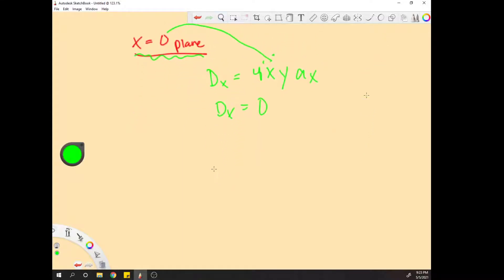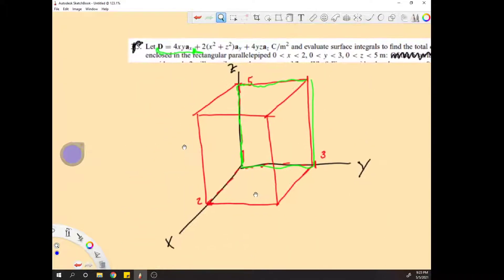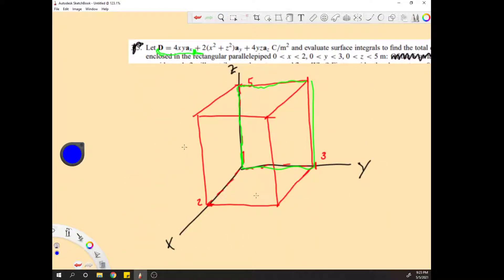Now we're going to jump around a bit and do the z equals zero plane. Similarly, z equals zero plane is right here and we're only worried about the z component of the flux of the electric field lines, whatever you want to call them.